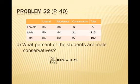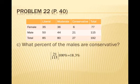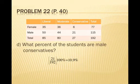It is very important that you know 'percent of what.' The word 'of' tells you what your denominator is — you have to read carefully. When someone says 10.9% of students are male conservatives, that means out of all students, 10.9% have both characteristics of being male and conservative. That's different from question c, where 18.3% of males are conservative — there we only consider the 115 males, not the females. Be very careful about what percentage you're talking about.